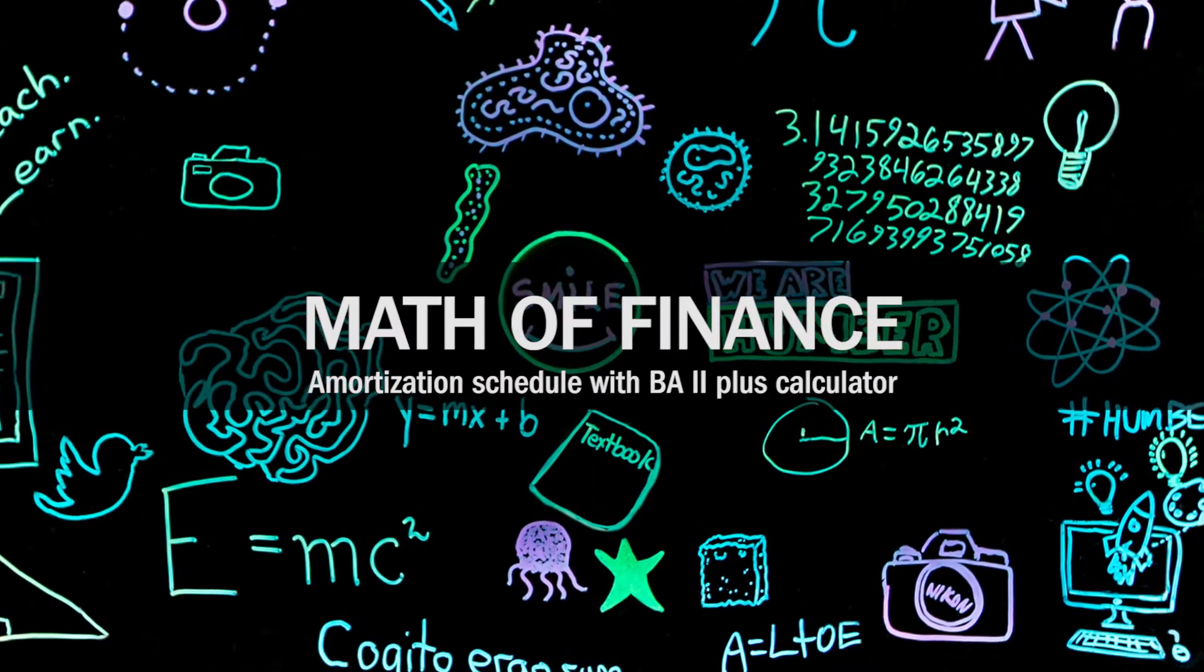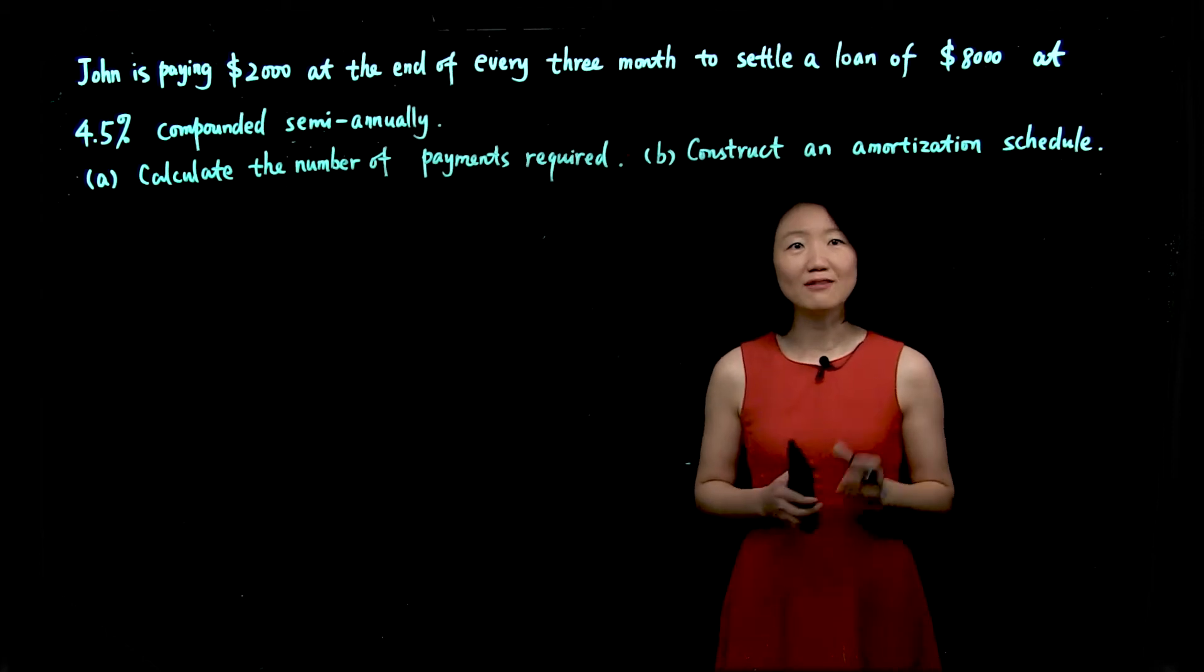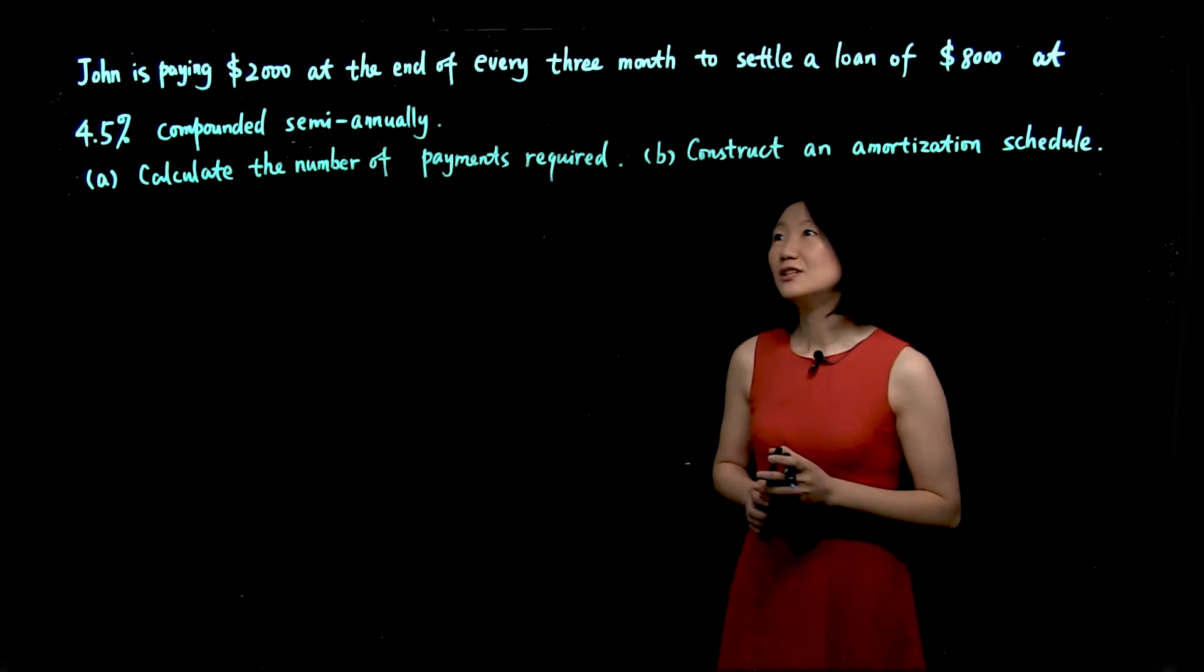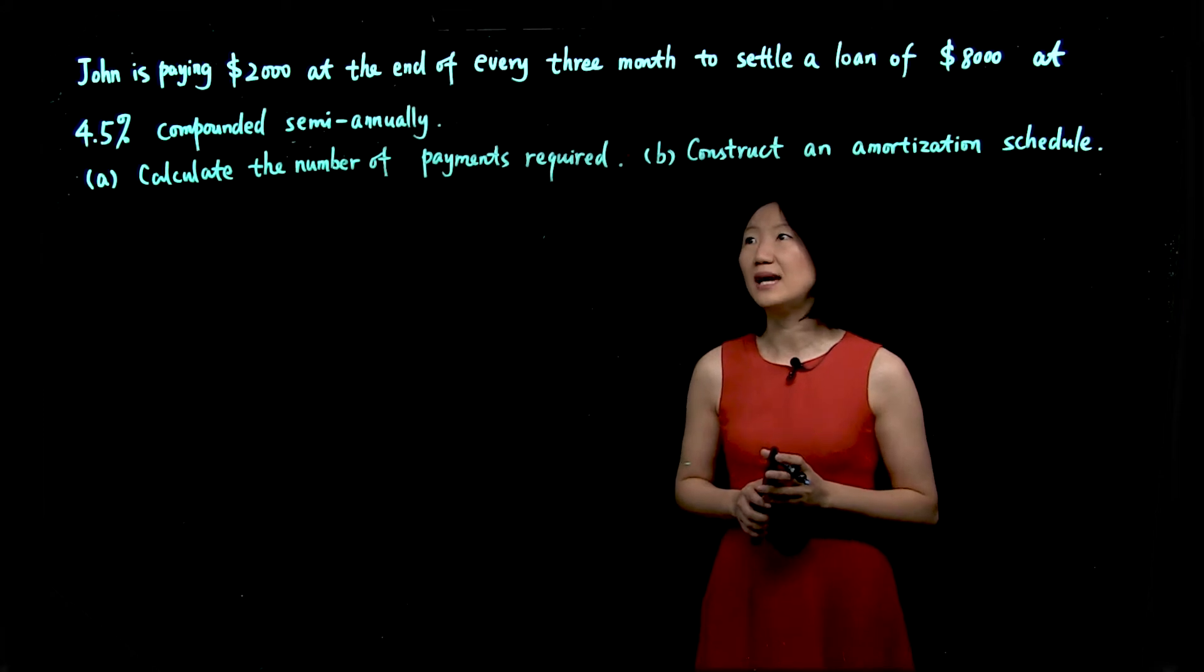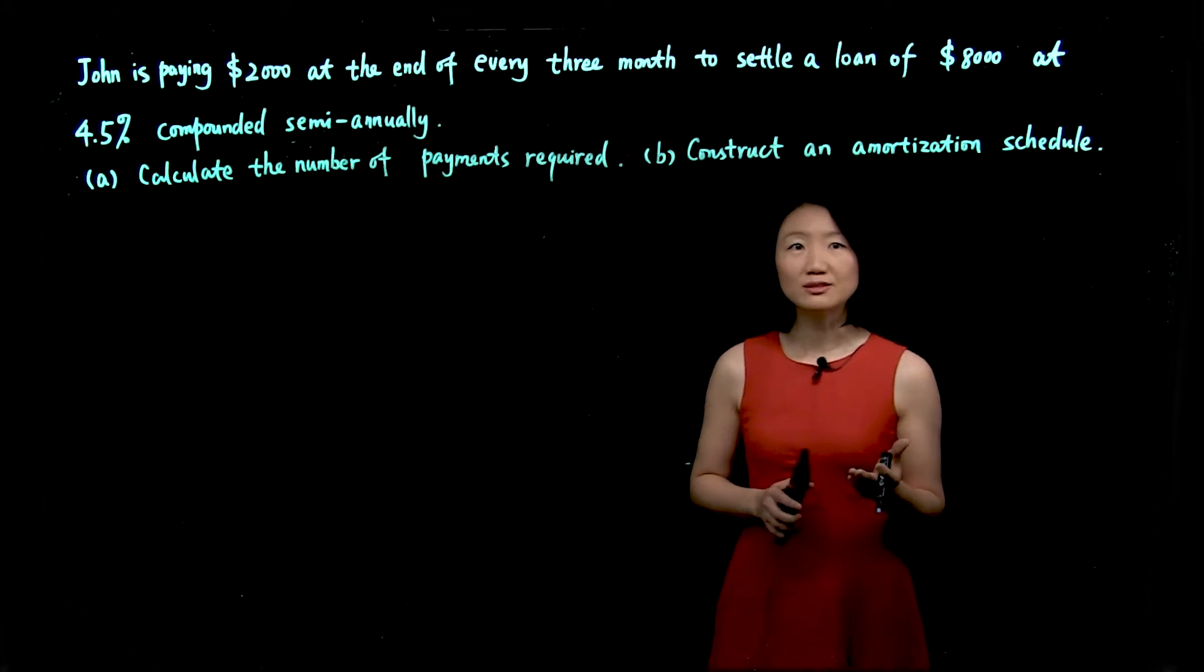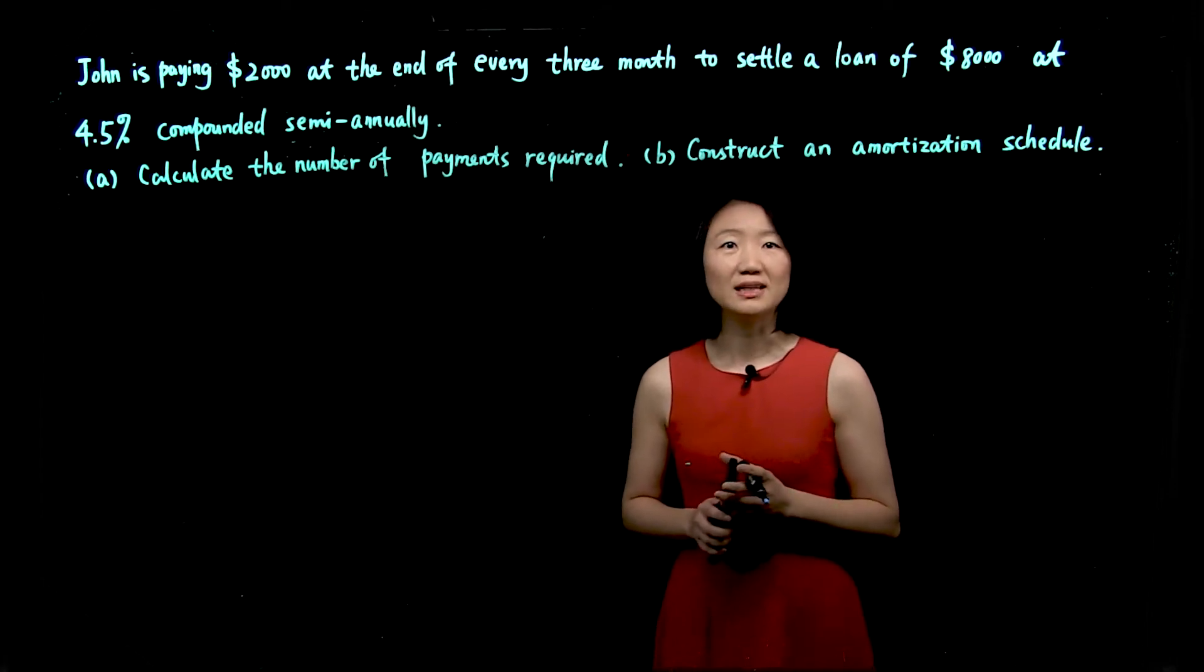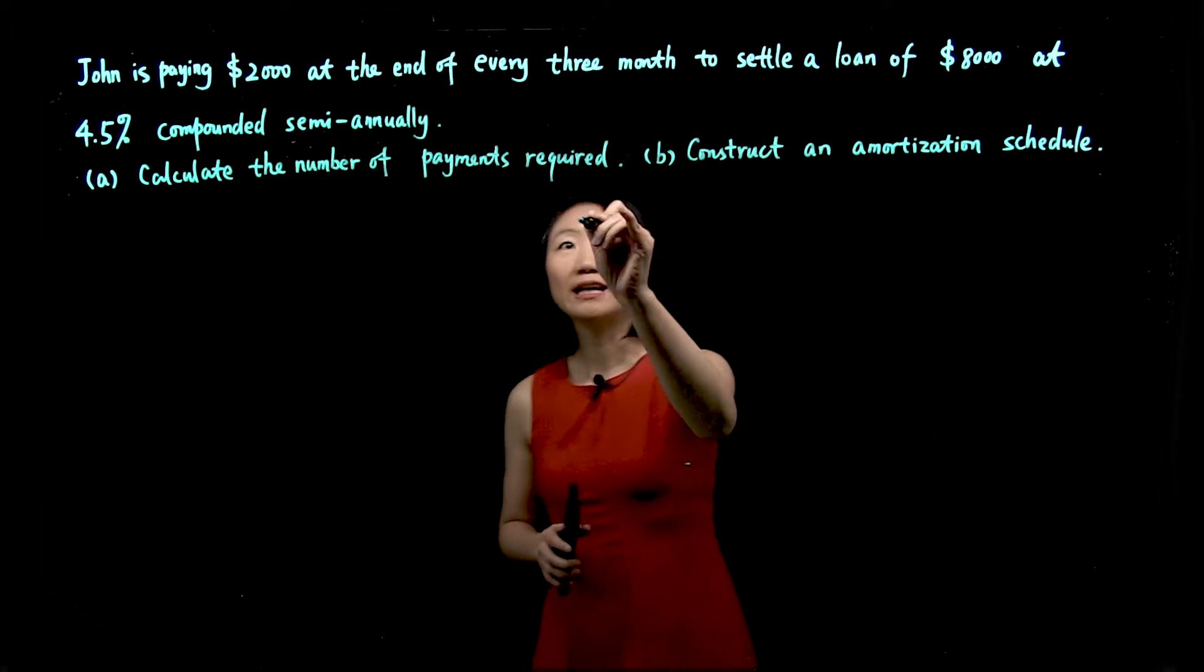Hi, everyone. Today we're going to use the Texas BA2 Plus Financial Calculator to solve an amortization problem. Let's look at an example. John is paying $2,000 at the end of every three months to settle a loan of $8,000 at 4.5% compounded semi-annually. We have two questions: A, we need to calculate the number of payments required. B, we need to construct an amortization schedule.